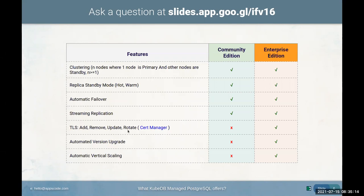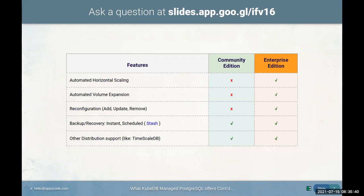We have support for streaming replication, TLS secrets (add, remove, update), and all of that is supported in our KubeDB operator including the enterprise version. We also have version upgrade support — if you're using an old version you can easily upgrade to the new version. Additionally there's vertical scaling, horizontal scaling, volume expansion, custom configuration (add, update, or remove), and backup with continuous database backups using Stash. We can also restore data from backup.